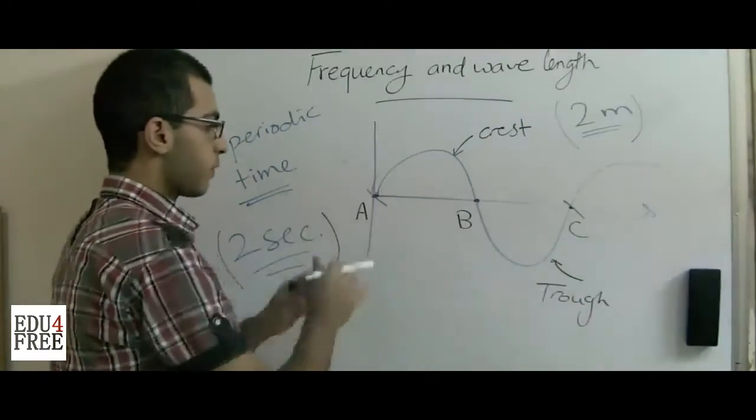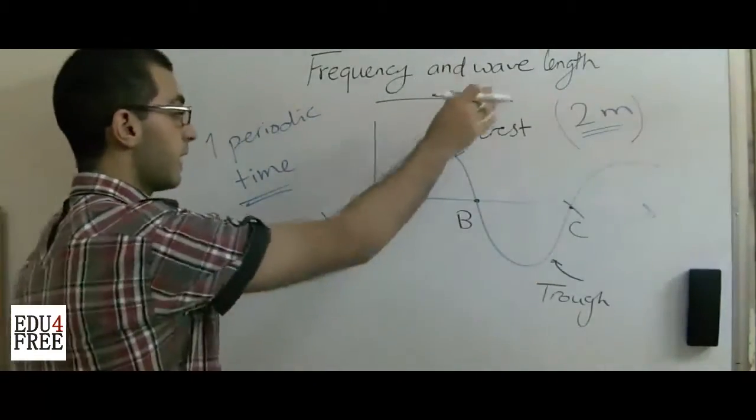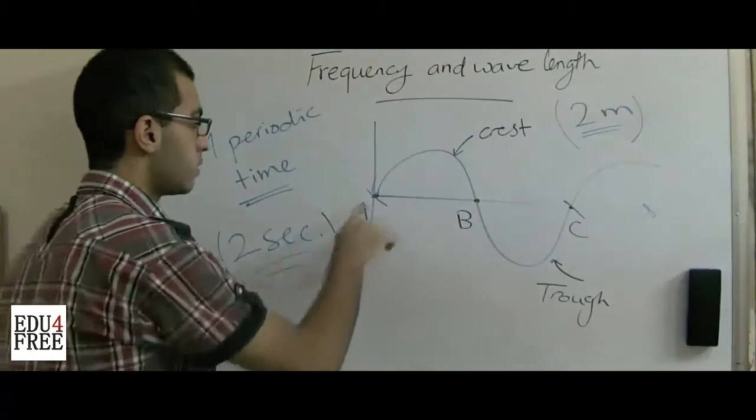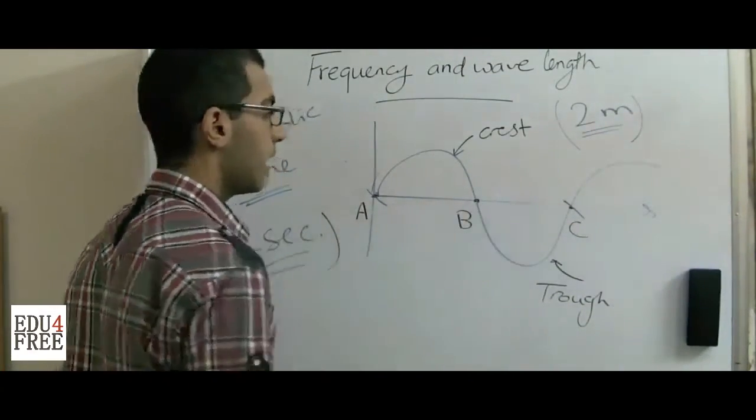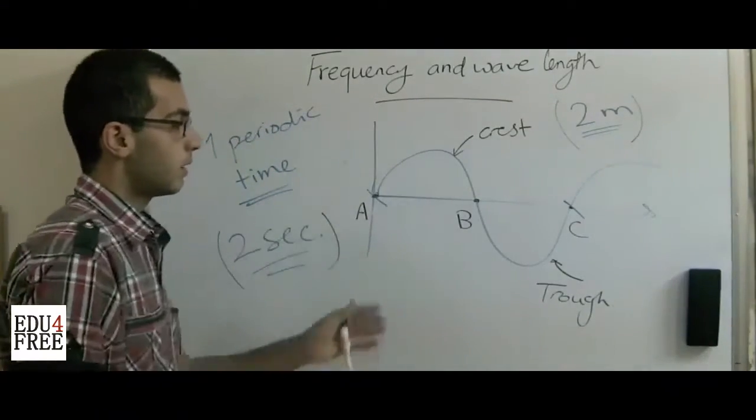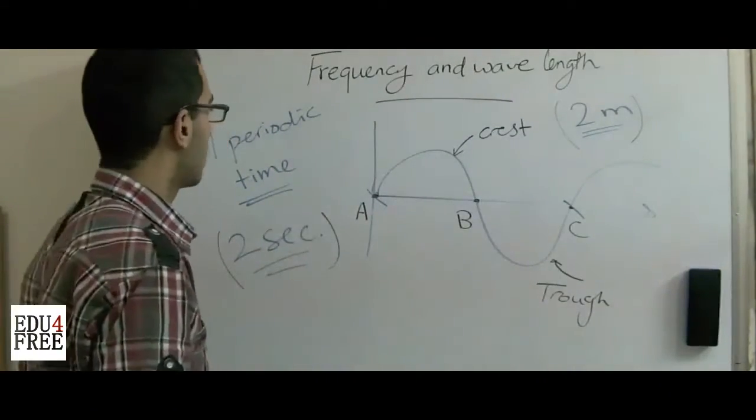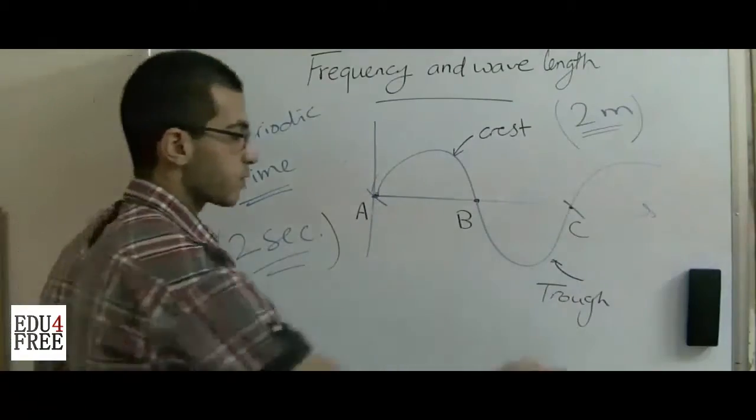We can deduce from all of this that the wavelength is the distance between two successive points in the wave motion. This is in the transverse wave.